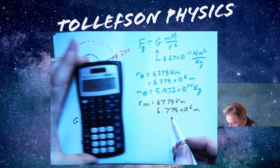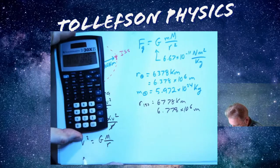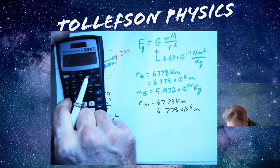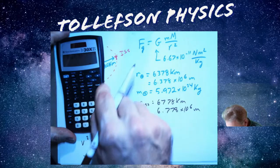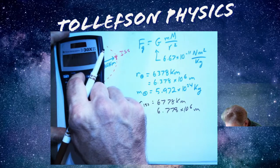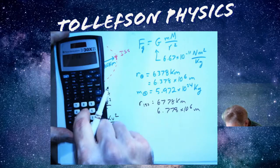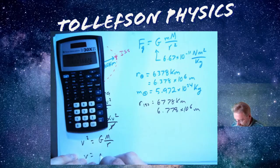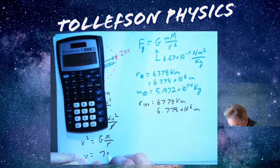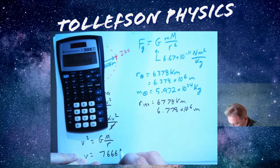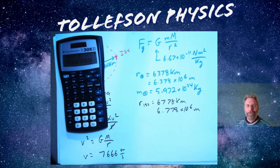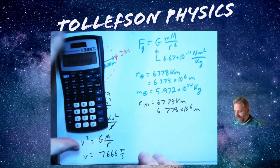There's the number I get. And so I'm going to take the square root so I can get the velocity. And I get a speed of 7,666 meters per second. So it's moving pretty good.